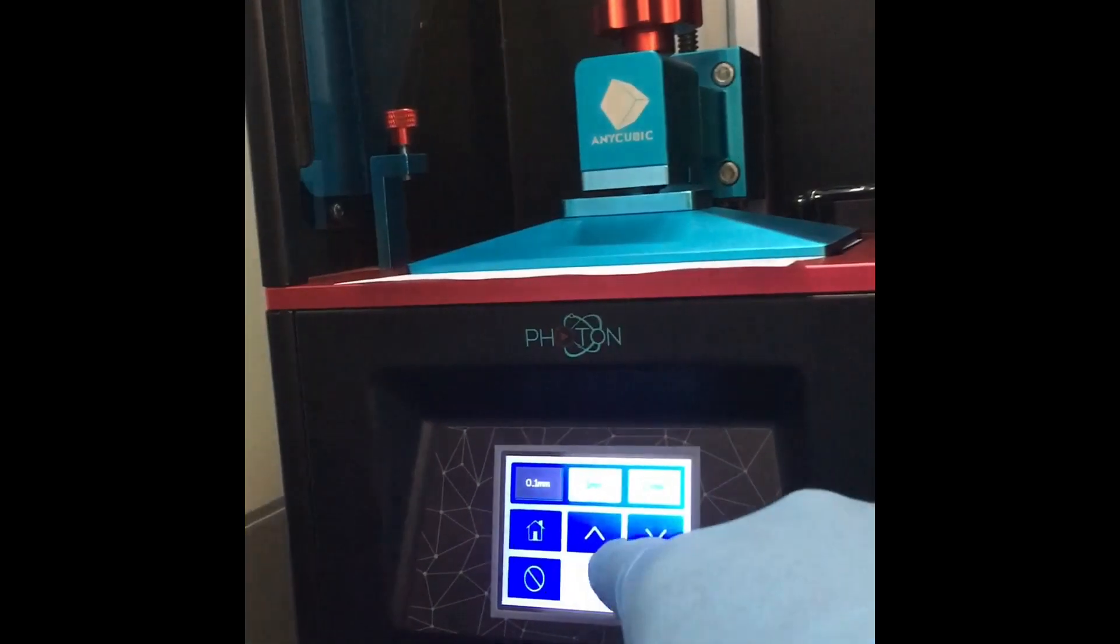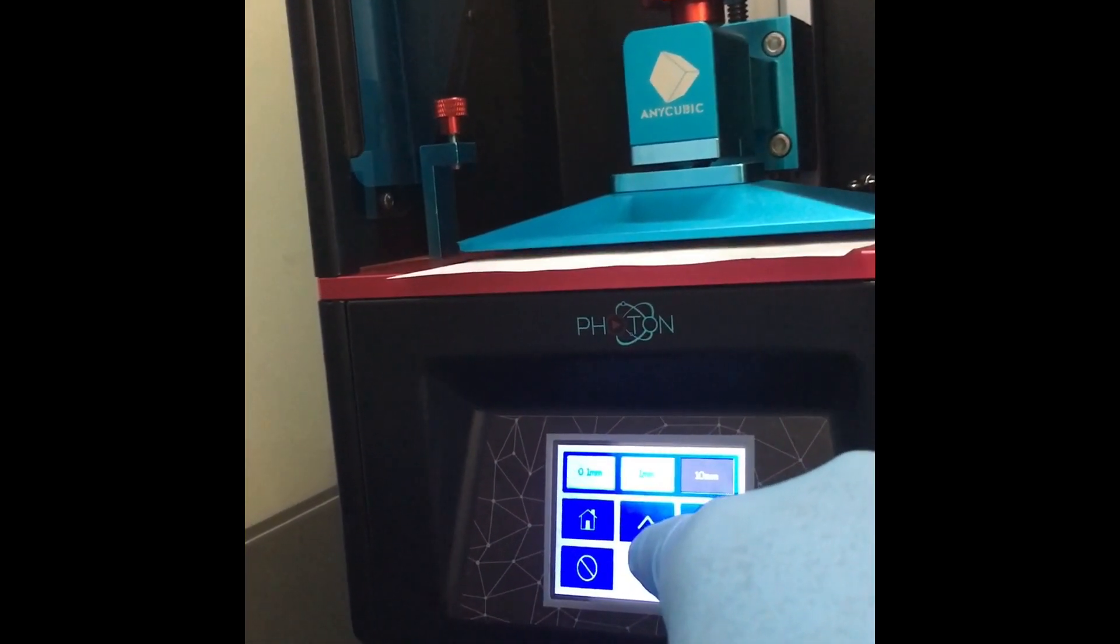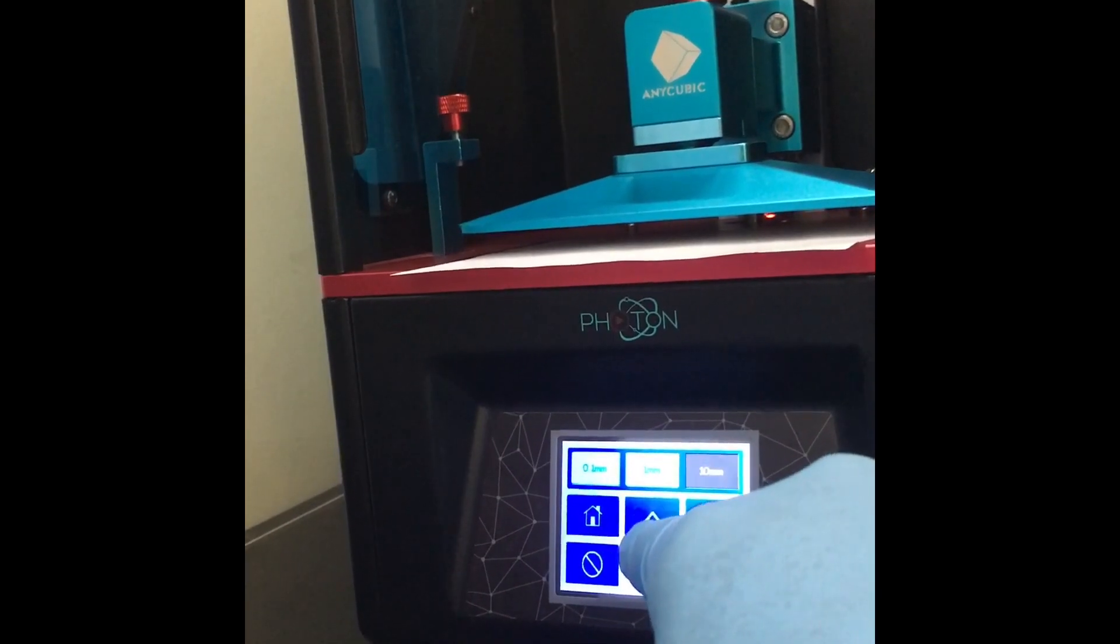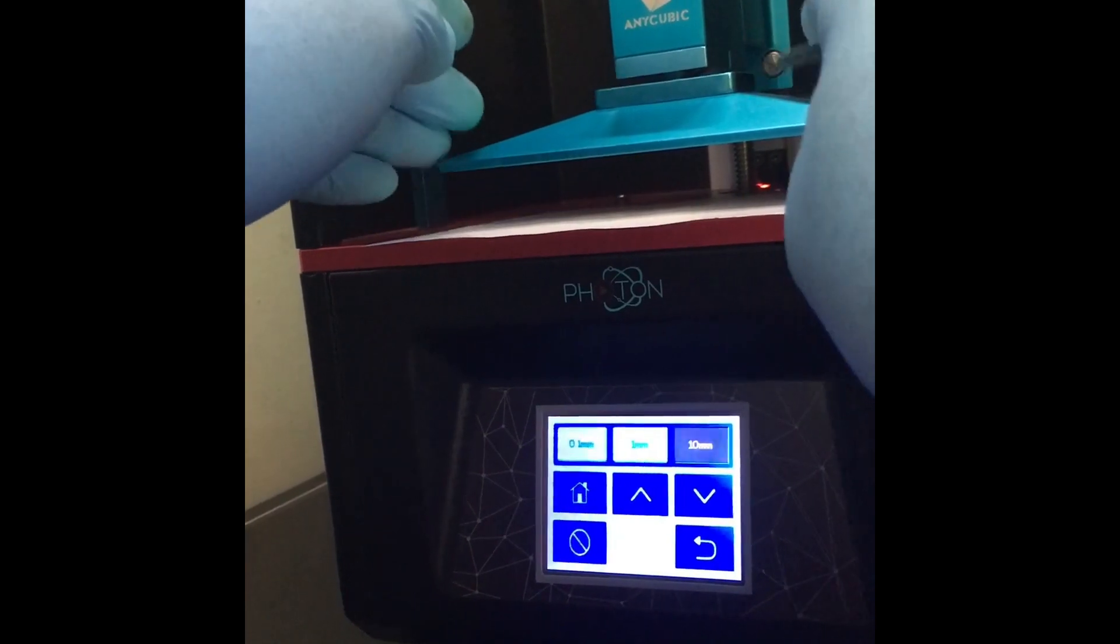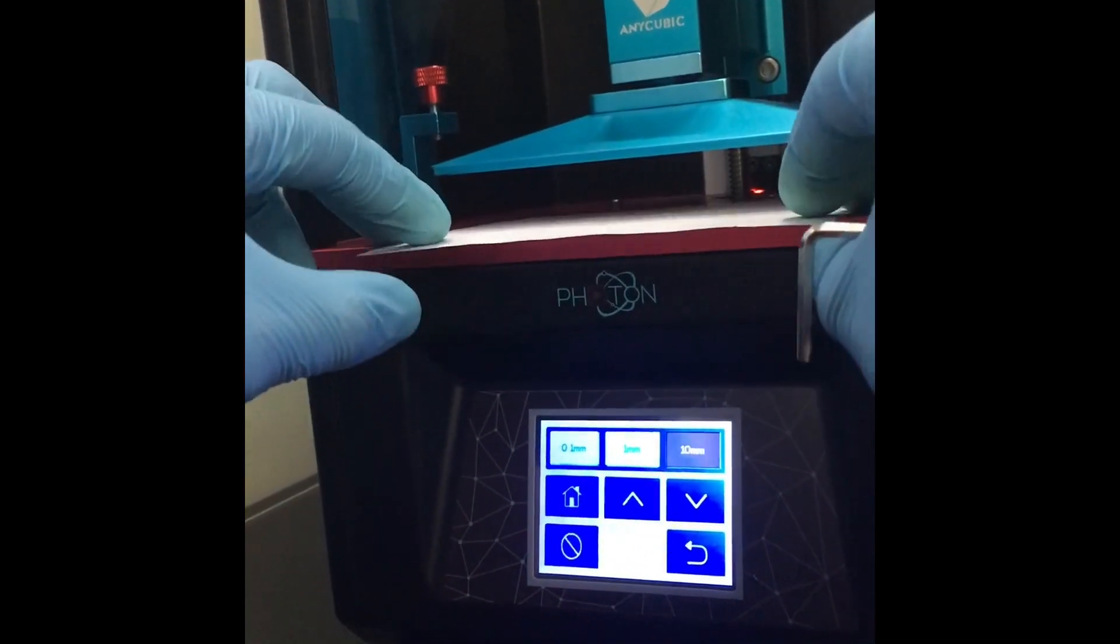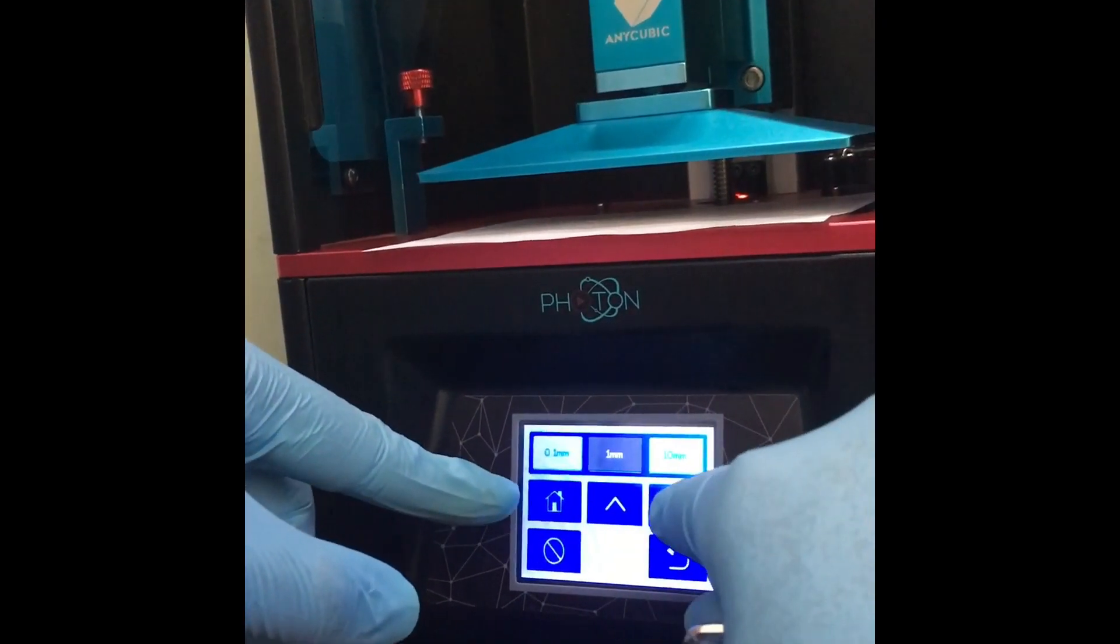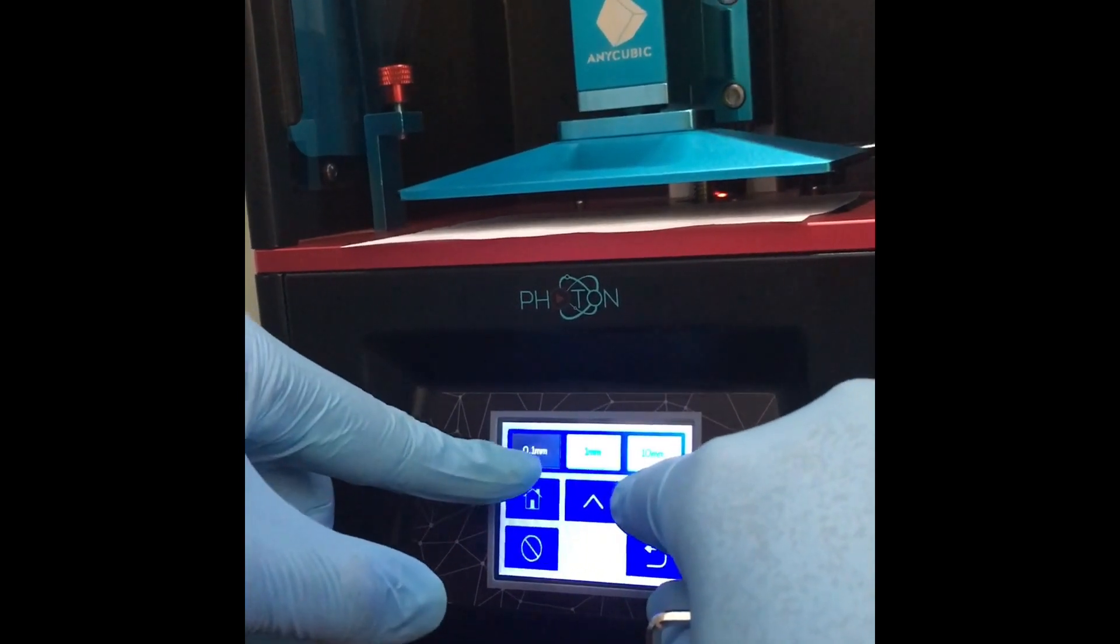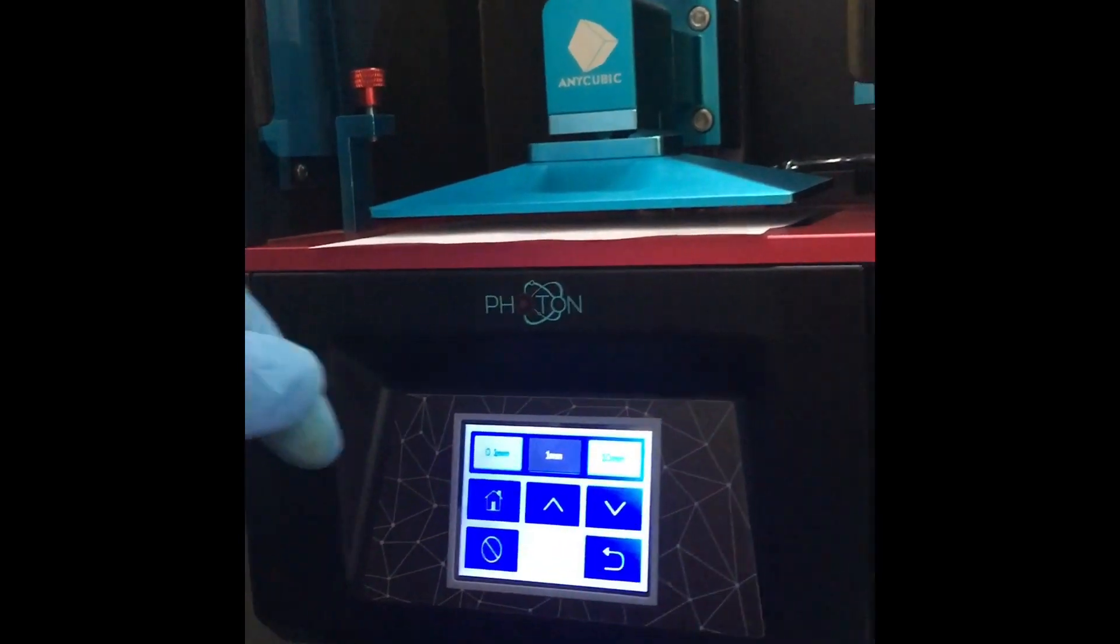And now what you want to do, lift it up. Now what we've accomplished here is this build plate is flat. This build plate is flat against the screen, which makes it a good start to actually level the printer. So from here, we're just going to keep going down and we're going to actually level.